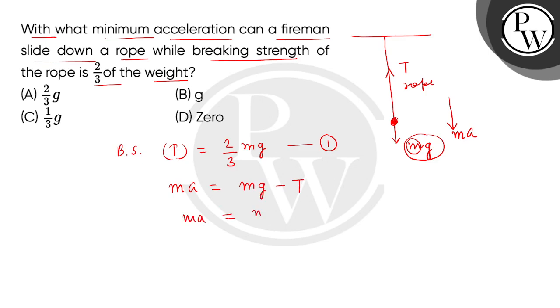MA equals to Mg minus 2Mg divided by 3. We get right side of Mg divided by 3, and on the left is driving force MA. M will cancel, so we get minimum acceleration here g by 3. The correct answer is option C. Thank you.